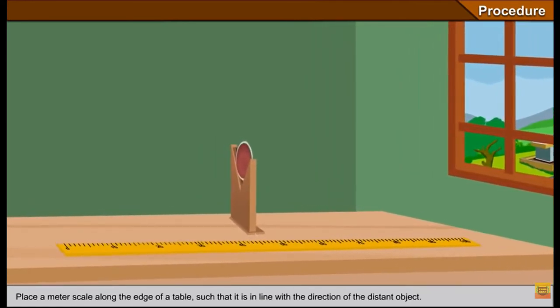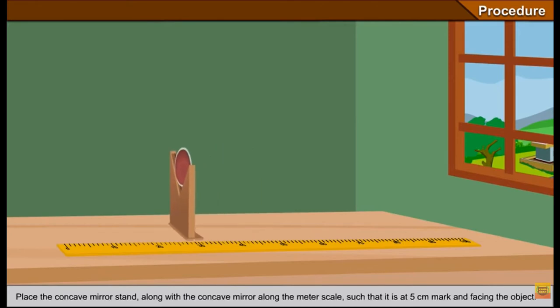Now keep a meter scale on the table with the help of which we will measure the focal length. Now give a specific position to the mirror stand. We are giving a specific position to the mirror. Actually this is at five centimeters. So let us keep it at five centimeters.